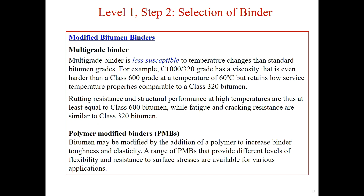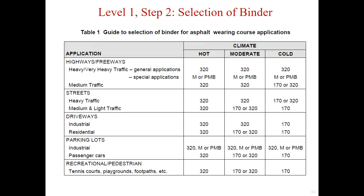Good performance of polymer modified binders includes improved flexibility, cohesion, and resistance to deformation for asphalt mix at high temperature. According to different application purposes and different climates in the area, we can choose different types of binder from class 170 to class 320, or either multi-grade binder or polymer modified binder.